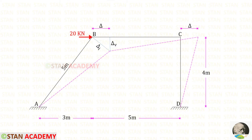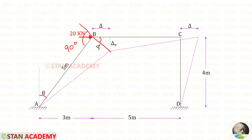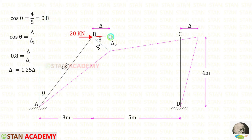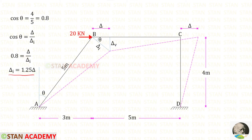We need to find delta-V and delta-I in terms of delta. This angle will be 90 degrees, so this angle and this angle will be the same. Therefore, cos theta is equal to delta upon delta-I. We know that both of these angles are the same, so the value of cos theta will also be the same. So instead of cos theta, we can apply 0.8. Finally, we get the relation delta-I is equal to 1.25 delta.